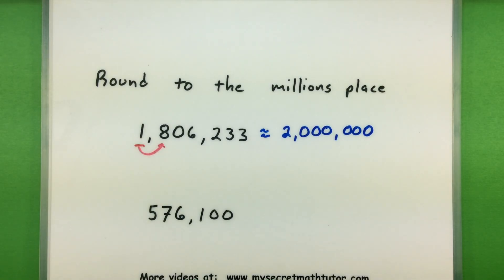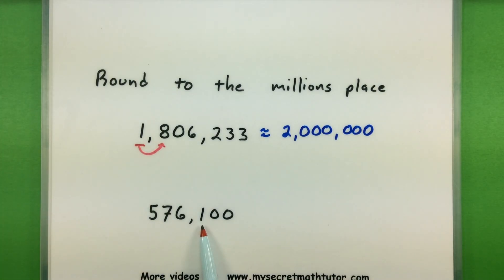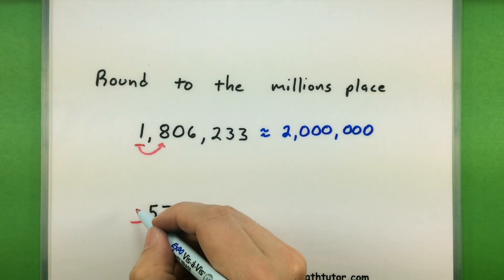One more example, rounding to the millions place. So I have ones, tens, hundreds, thousands, ten thousands, hundred thousands. And I don't know—it looks like I'm out of millions, but it would essentially be this spot right here. Well, if there's nothing there, you can imagine this being a 0, and really just continue on with the process.